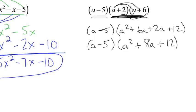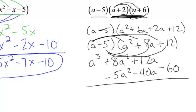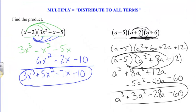So now it's just like the problem we had over here, where it's a binomial times a trinomial. Distribute the a, so we get a cubed plus 8a squared plus 12a. Then we distribute the negative 5, and we get negative 5a squared, negative 40a, and negative 60. Combine our like terms. Again, it's easy because they're in vertical format. A cubed plus 3a squared minus 28a minus 60. And that is our final answer.